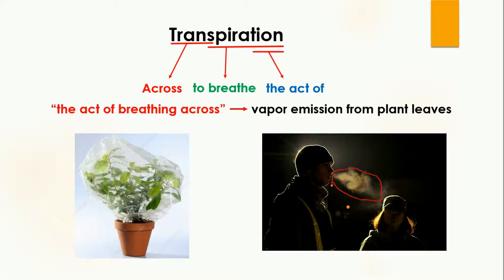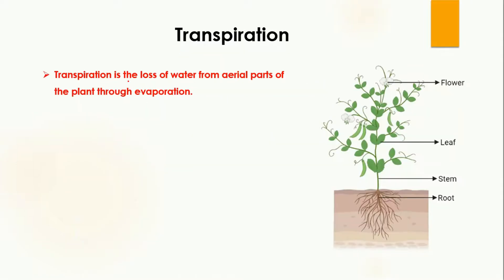This breathing out in humans is similar to the transpiration taking place in plants. Transpiration is actually the loss of water from the aerial parts of plants through evaporation. Water taken from the soil moves in the upward direction, and then water from the aerial parts — which may be leaves, stem, or flowers — is removed out of the plant by the process of evaporation, meaning in the form of vapors.